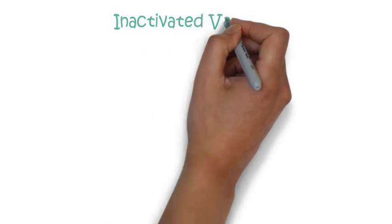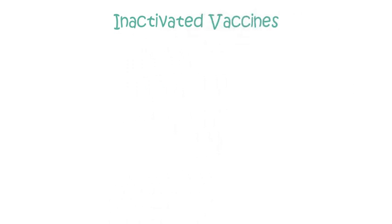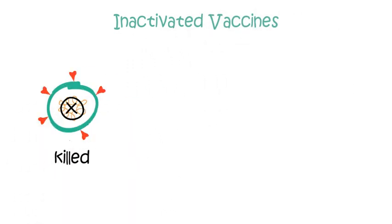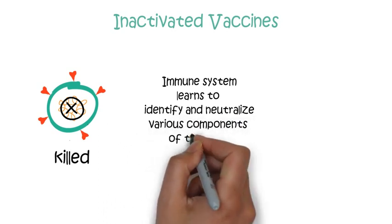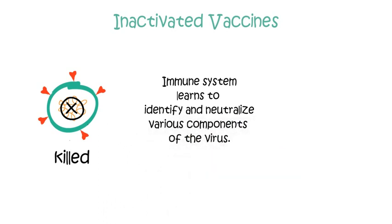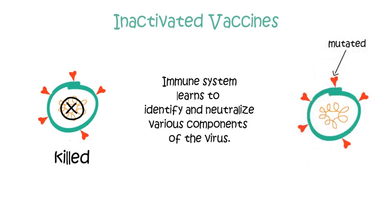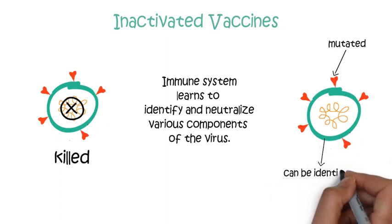Inactivated vaccines have the advantage that the immune system learns to identify and quickly neutralize not only spike protein but also other components of the COVID-19 virus. So even if the spike protein mutates, some protection will be provided against the mutant strains because the body can still identify other components of the virus.